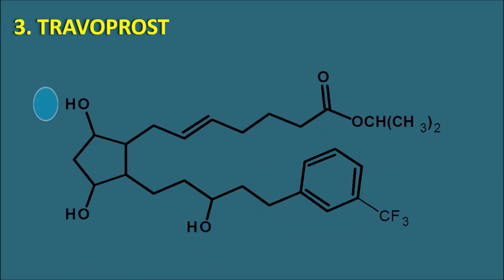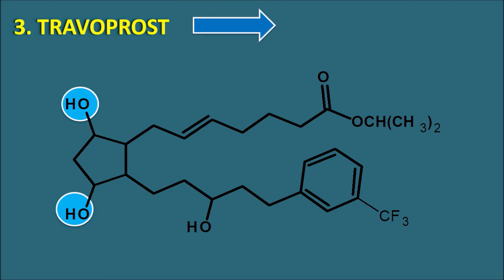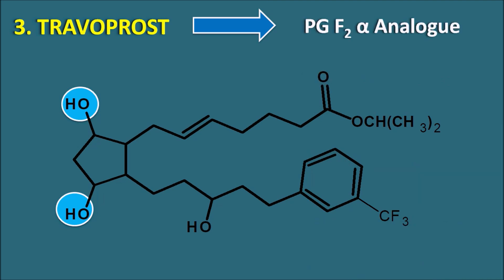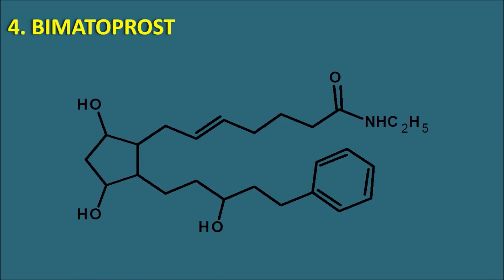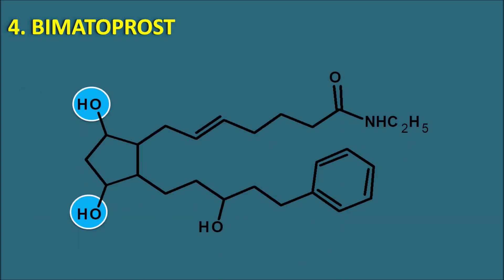Similarly, the third drug is travoprost, which also has an OH group at the 9th position and an OH group at the 11th position. Its structure is similar to latanoprost, except the phenyl group has a trifluoromethyl substituent on one terminal, making travoprost a prostaglandin F2-alpha analog. The fourth drug is bimatoprost, which also has the 9,11-dihydroxy groups. On one terminal it has an amide linkage — not an ester or carboxylic acid, but an amide substituted with an ethyl group — and on the other terminal it has a phenyl ring. Bimatoprost is also a prostaglandin F2-alpha analog.